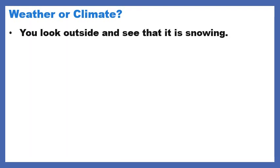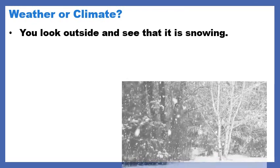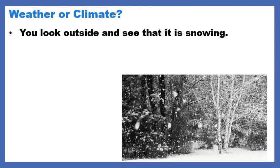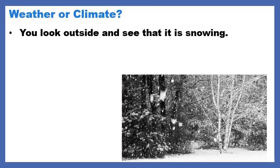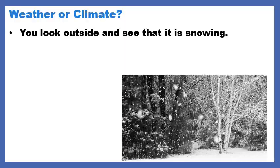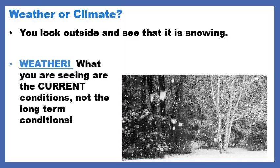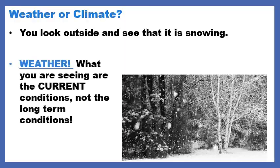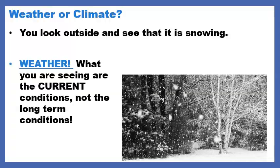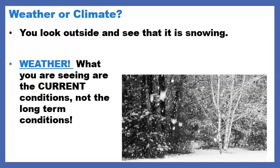Next example: you look outside and you see that it's snowing — I hope we don't see this for a while, although it did snow in May. Weather or climate? Weather. What you're seeing outside right now is the current condition, not the long-term condition.